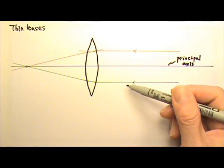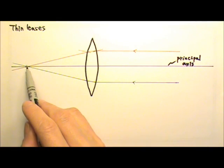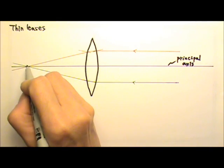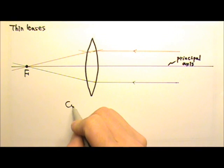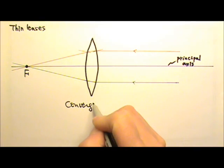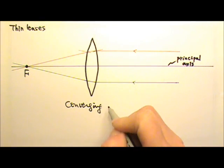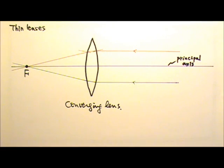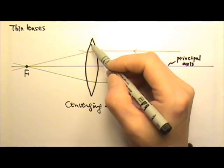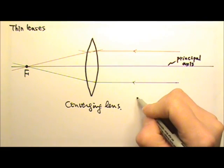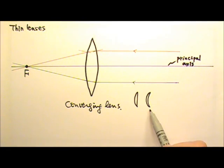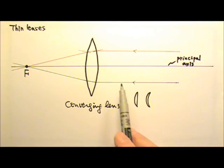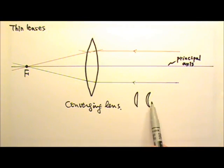Because both of these paraxial rays meet right here, this is the focal point of this converging lens. A converging lens does not have to be shaped like this — it can also be shaped like this or like this. As long as it is thicker in the middle, it is a converging lens.